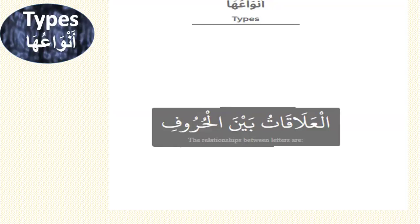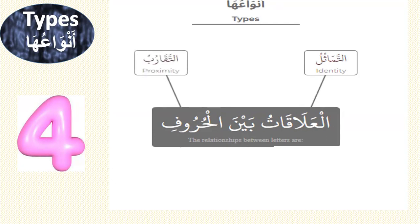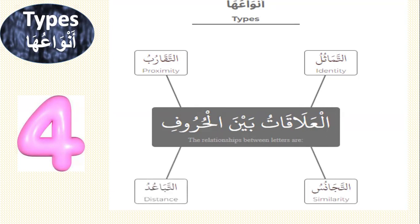The types of relationships between two letters are four: number one is identity (Al-Tamathul), number two is proximity (Al-Taqarib), number three is similarity (Al-Tajanus), and number four is distance (Al-Tabaud).